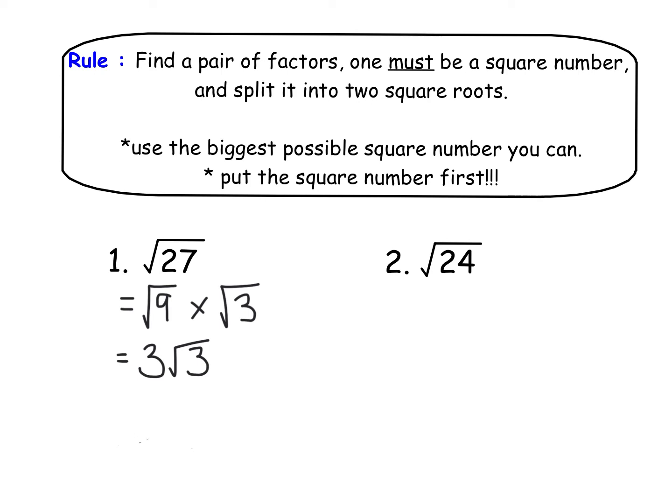So we can rewrite this as the square root of 4 times the square root of 6. Now the square root of 4 we know is exactly 2. We can't do anything with the root of 6. So this just becomes 2 root 6.